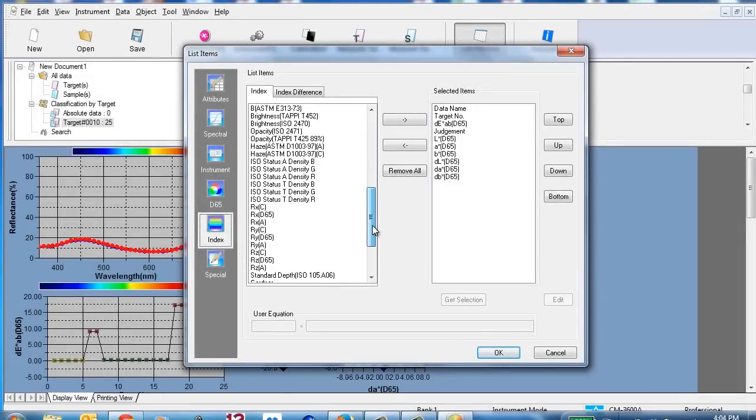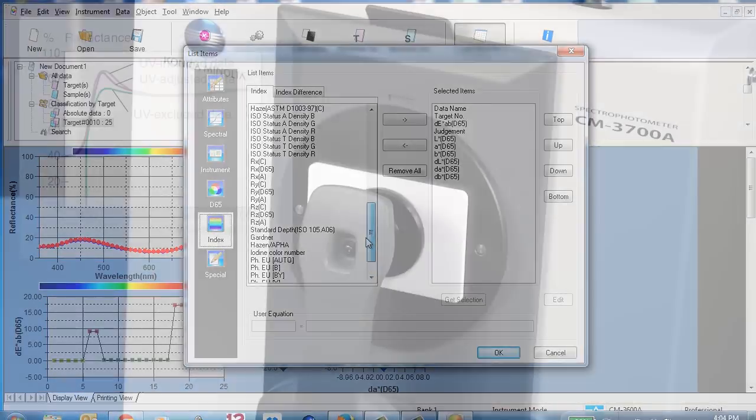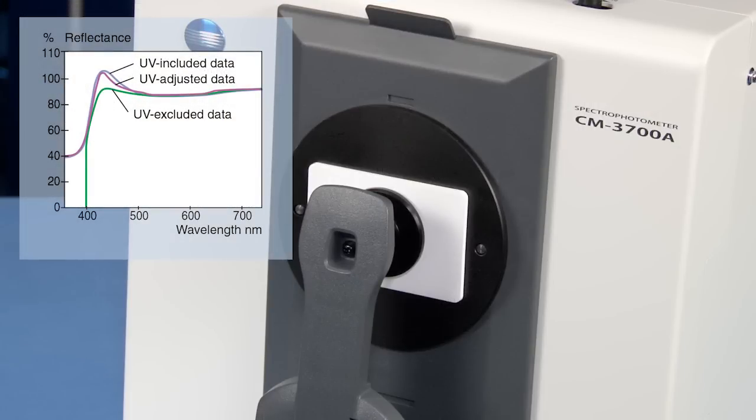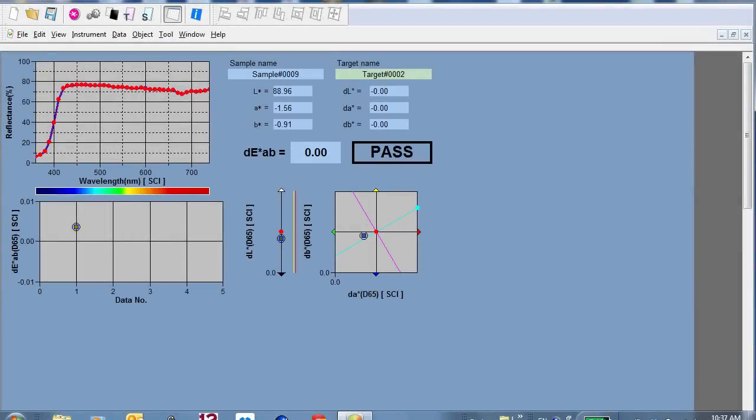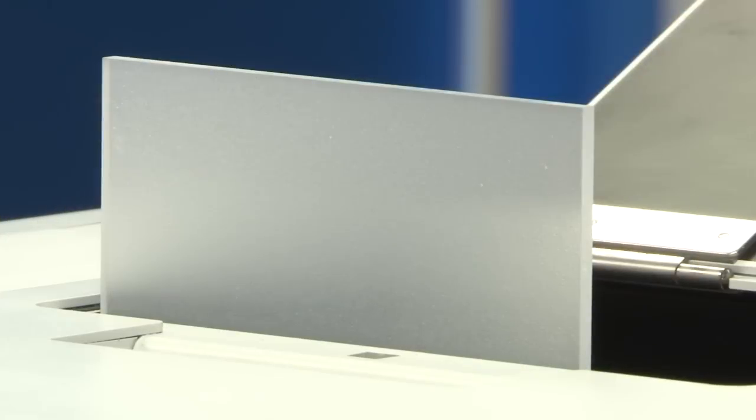Select from 16 illuminates and up to 40 indices to determine distinct color and appearance properties including brightness, whiteness, yellowness, and haze.